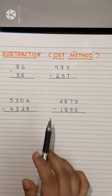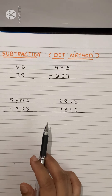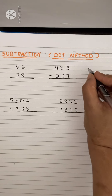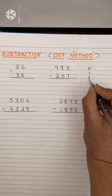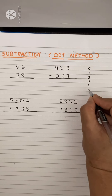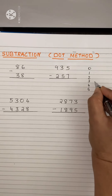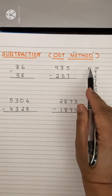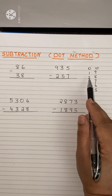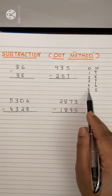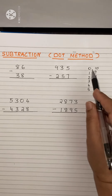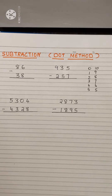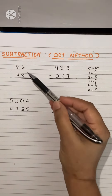This is the subtraction dot method. For this we need to write the numbers that sum up to 10. Write on the side of the paper: 0, 1, 2, 3, 4, 5, and from the other side 5, 6, 7, 8, 9, 10. So we can see: 0 plus 10 is 10, 1 plus 9 is 10, 2 plus 8 is 10, 3 plus 7 is 10, 4 plus 6 is 10, and 5 plus 5 is 10. We use these pairs for doing the subtraction dot method.